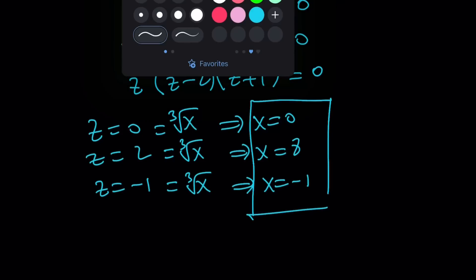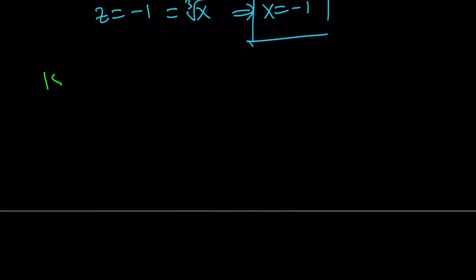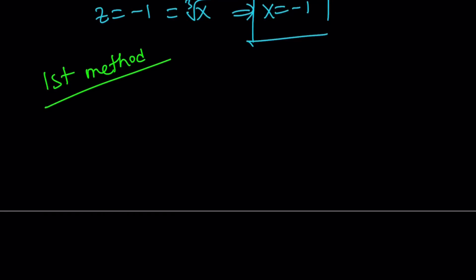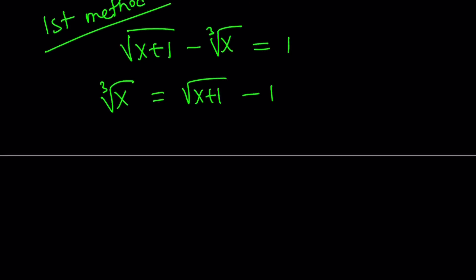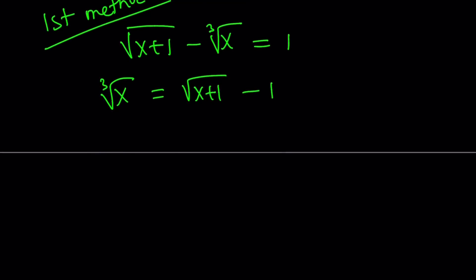So I'm going to talk about the first method next, since we talked about the second method first. Let me go ahead and rewrite the original problem so you can see where it comes from. So instead of isolating the square root, this time I'm going to do something different and isolate the cube root. Cube root of x can be written as square root of x plus 1 minus 1. And then I'm going to cube both sides.